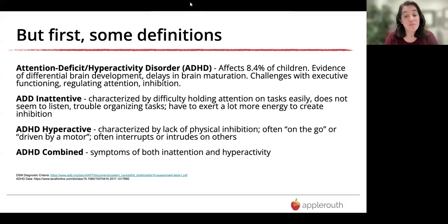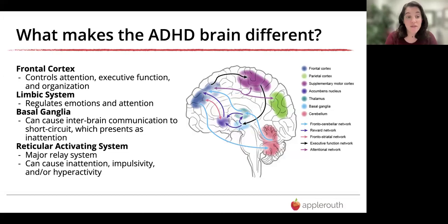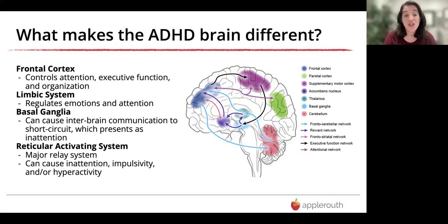ADHD combined gives you symptoms of both inattention and hyperactivity. What makes the ADHD brain different — this is not just 'if only this kid could run around a little bit more.' There are actual changes in the brain causing this dysfunction. The four areas we pay attention to are: the frontal cortex, which controls attention, executive function, and organization; the limbic system, which regulates emotions and attention; the basal ganglia, which handles inter-brain communication and can short-circuit presenting as inattention; and the reticular activating system, which can also cause inattention, impulsivity, and possibly hyperactivity.